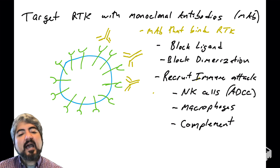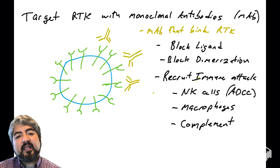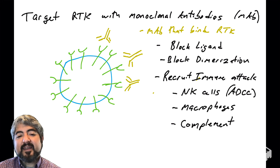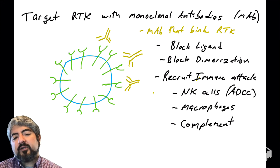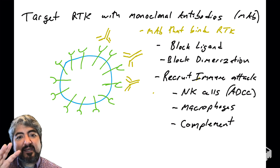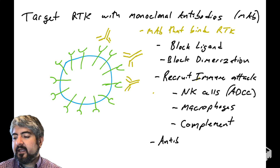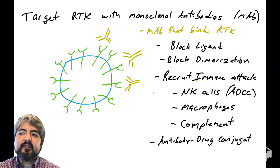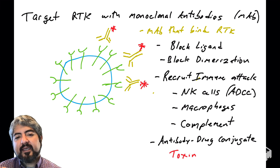Macrophages, which are phagocytes, can also recognize the antibody-coated cell and phagocytose and destroy it. Additionally, the complement system via the classical pathway can decorate the cell with complement proteins, leading to complement activation and destruction of the cell. Those are possible ways that antibody binding to the cancer cell can help destroy it.